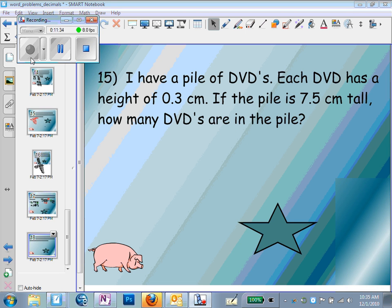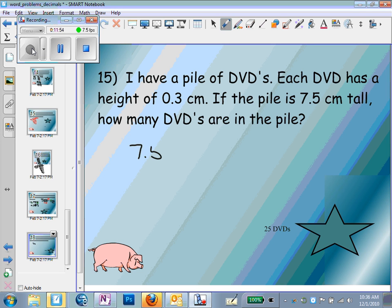I have a pile of DVDs. Each DVD has a height of 0.3 centimeters. If the pile is 7.5 centimeters tall, how many DVDs are in the pile? Whenever you have a total and you're splitting that total up, that's division. So we're taking this big pile of 7.5 centimeters total, and dividing it by the height of each individual item to see how many items there are. So it's 7.5 divided by 0.3. We have to move that decimal over to make 0.3 a whole number. We can't divide by a decimal. If we move it over one place in 0.3, we have to move the decimal over one place in 7.5. And 3 is going to go into 7 two times, and 3 is going to go into 15 five times. So it's 25 DVDs.